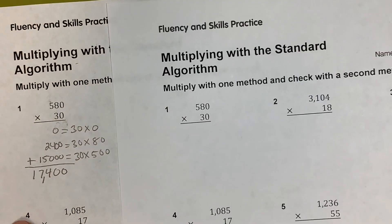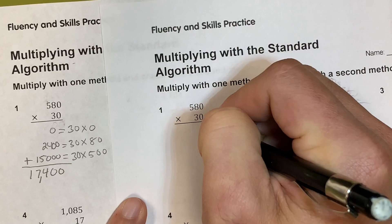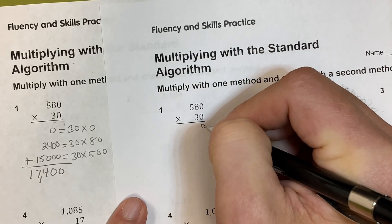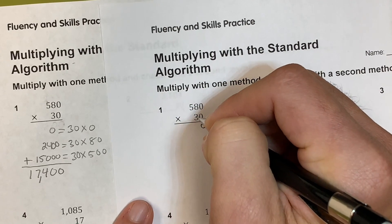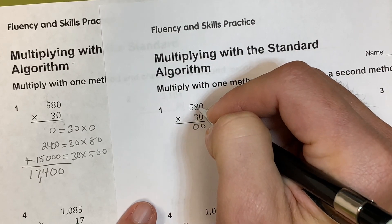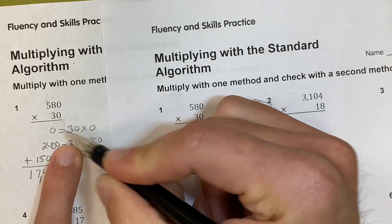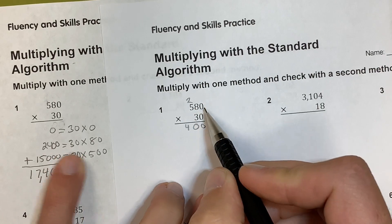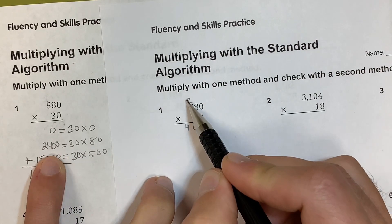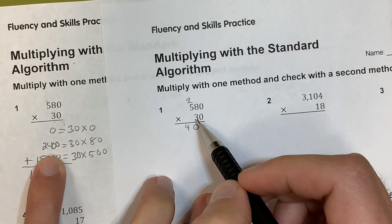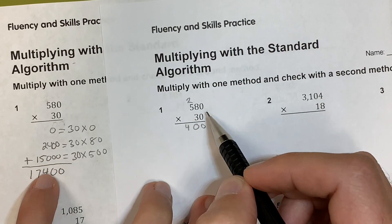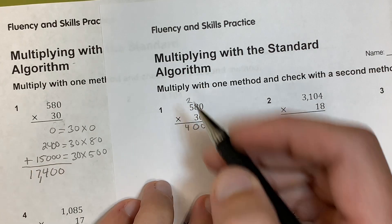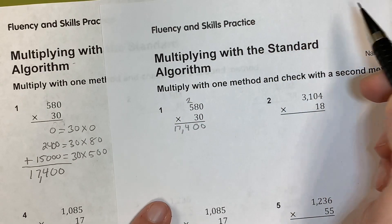Now doing the same problem with the standard algorithm: since we'd have zeros across the top doing 0 times 0, I'll skip that and add a 0 to move to the tens spot. So 3 times 0 is 0 — that's essentially 30 times 0. Then 3 times 8 is 24, giving 2,400. I carry my 2,000, then do 30 times 500 which is 15,000, add the carried 2,000, and get 17,000. Same answer — just broken down differently.